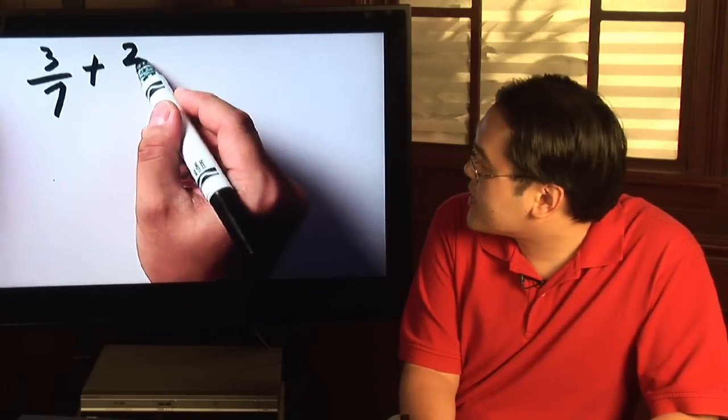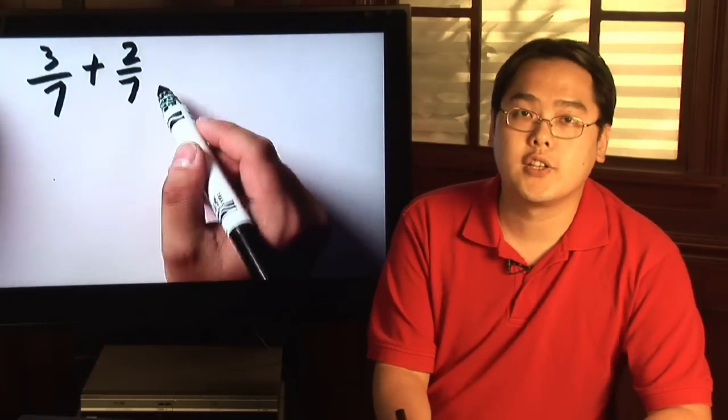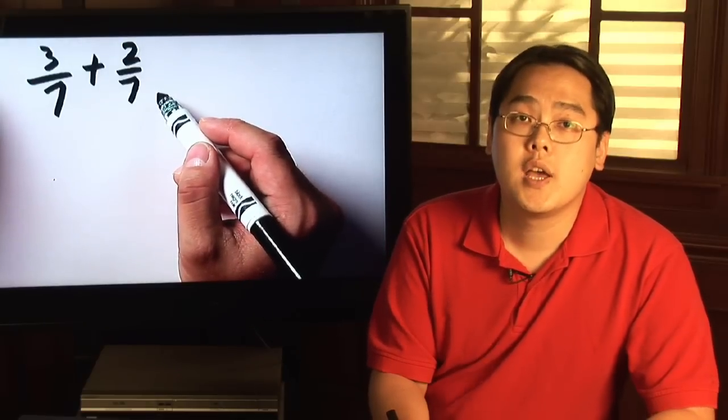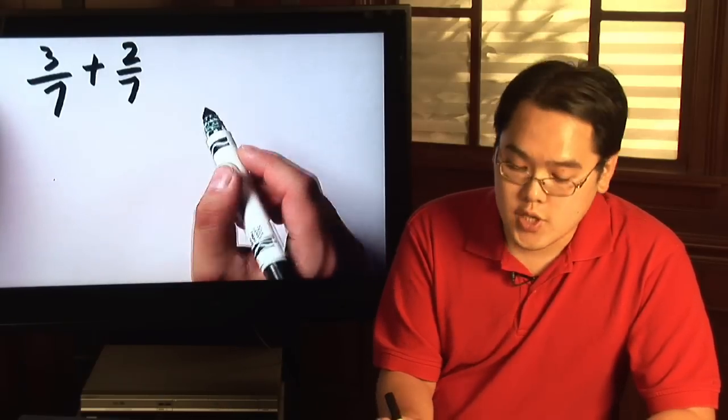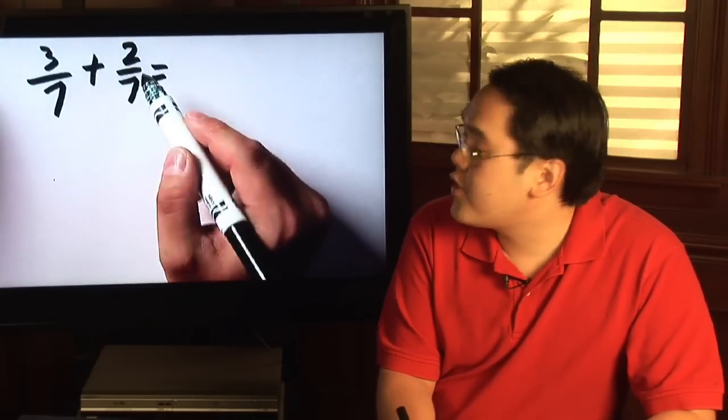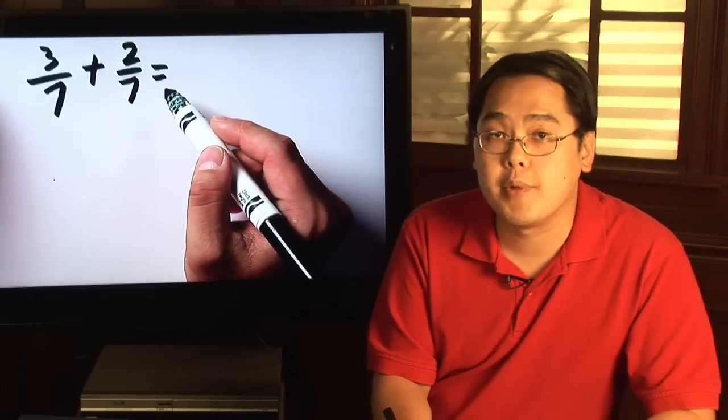If two fractions have the exact same denominator, like three sevenths plus two sevenths, then you can just add across. All you need to do is add the numerators across and keep the denominator the same.